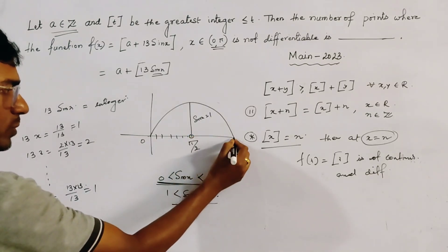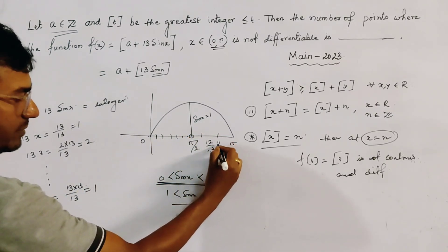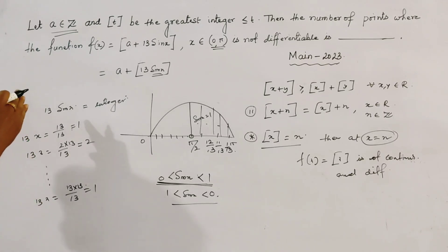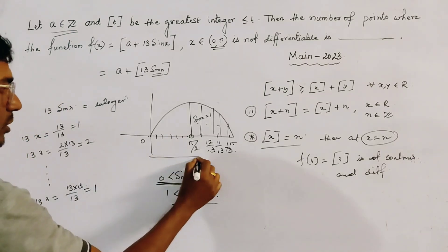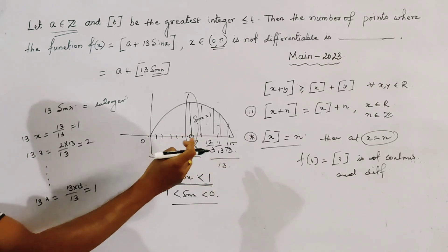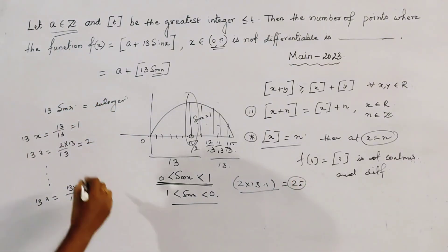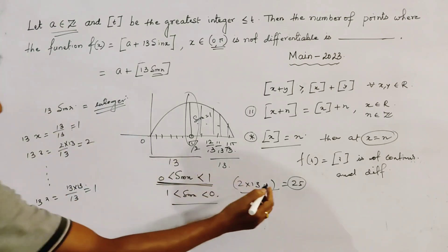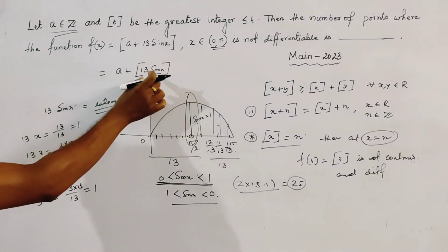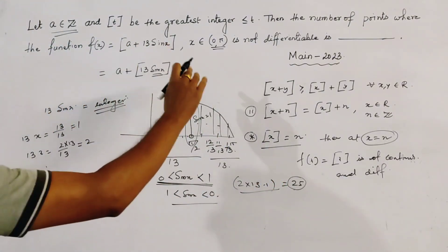Similarly, in the interval [π/2, π], there are also 13 such values: sin x takes values 12/13, 11/13, down to 1/13. However, the point sin x equals 1 (at x = π/2) is counted twice, so the total number of points is 2 × 13 − 1 = 25 points at which 13 sin x is an integer, and thus the function is not differentiable.